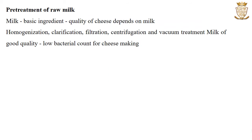We are now going to learn the process of cheese making step by step. The first step is the pre-treatment of raw milk. Milk is the basic ingredient and the quality of cheese depends on milk, so the biological, physical and chemical properties of the milk have to be controlled for good quality cheese.